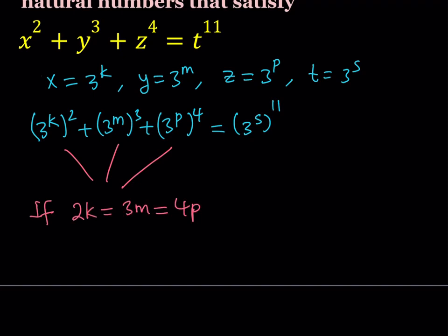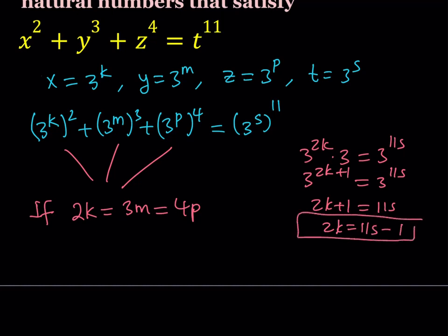So it's times 3, that should give me 3 to the power 11s, which means 3 to the power 2k plus 1 equals 3 to the power 11s. Which means that 2k plus 1 is equal to 11s. In other words, 2k can be written as 11s minus 1. What I said here is also true for 3m and 4p since they're all equal, so I can safely say that 2k equals 3m equals 4p equals 11s minus 1. We got some kind of equality here, let's work off of that.